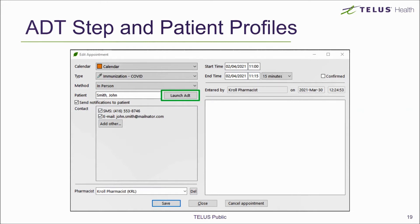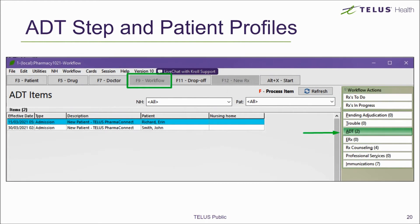For the ADT step, you can call up the appointment and do it from within the appointment details by clicking on the Launch ADT button beside the patient's name. However, instead of going to every individual appointment to check if the step has been completed, you can choose to go to the F9 workflow button at the top of your scroll session and select the ADT menu option on the right-hand side column to view all appointments that still need the ADT step to be completed.